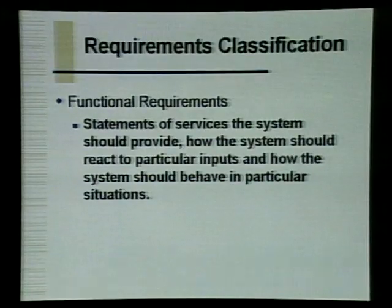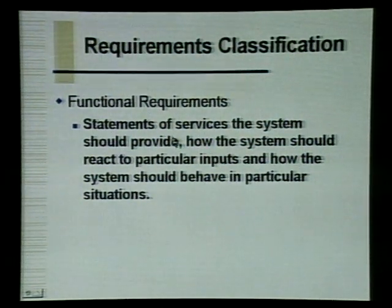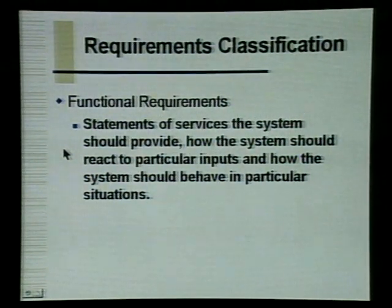A system generally has three different types of requirements. The first are functional requirements, which are statements of services the system should provide, how the system should react to particular inputs, and how the system should behave in particular situations. For example, for word processing software: the software should provide a facility to save a file, or a facility to open a file. In the context of a library information system, a requirement can be: the system should provide a facility to search the catalog.